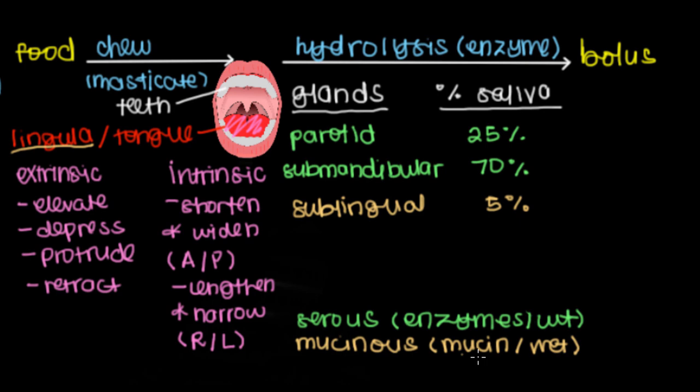Finally, the last gland that we have that contributes to hydrolysis in our mouth is called von Ebner's gland, which releases less than 5% of our salivary contents - very little. These guys are mainly located at the tip of our tongue.